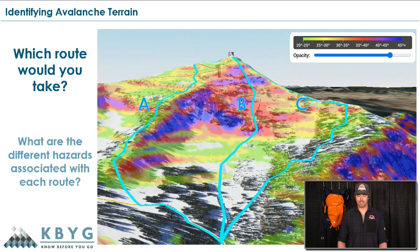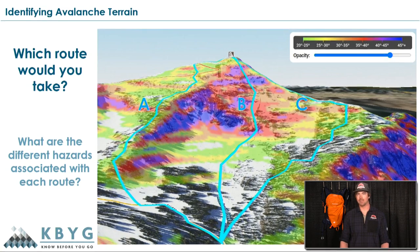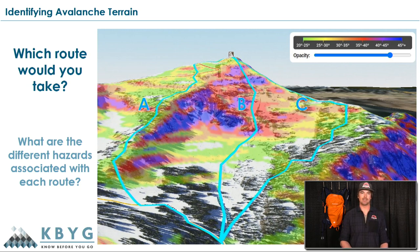Let's look at another example — this is Mount Blackmore up in Montana. We have three routes: A, B, and C. Route A takes a sub-ridge all the way to the top and it looks like we're in low angle terrain, but what are we standing above? Steep, gnarly cliffs. If anything were to come down above us taking route A, even though we're not in steep terrain, it would carry us into steep consequential terrain — not a place I'd want to get caught in an avalanche.